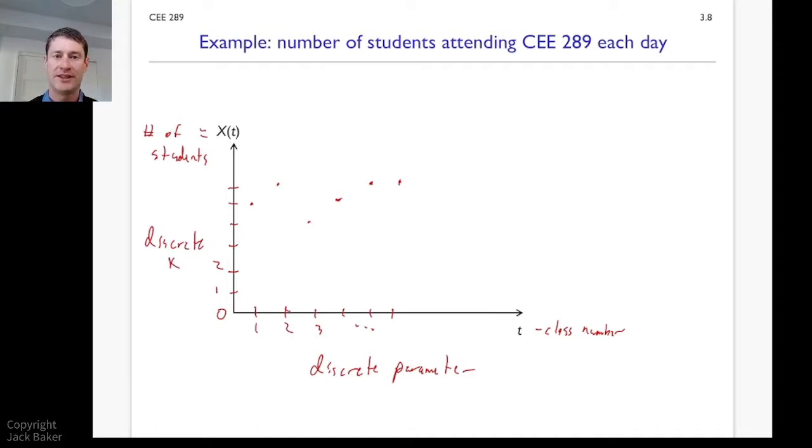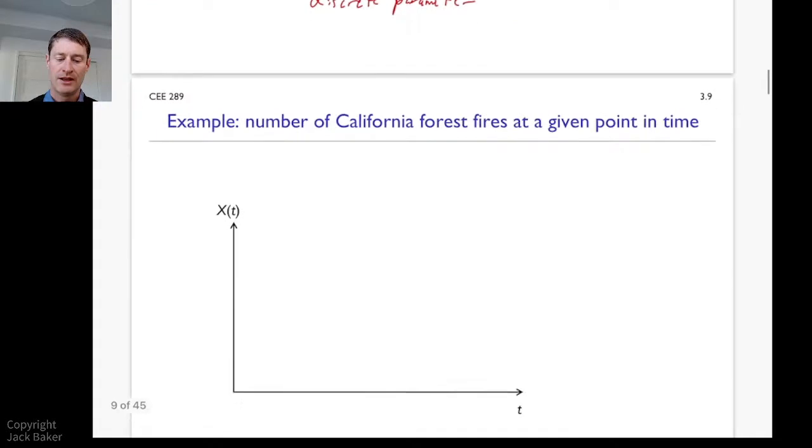And this is still a stochastic process, right? But I could still talk about probability distributions of X at a set of t values.